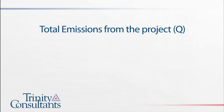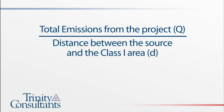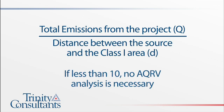The Q over D criteria specifies that when the total emissions from the project, Q, divided by the distance between the source and the Class 1 area, D, is less than 10, no AQRV analysis is needed. However, a Class 1 PSD increment analysis may still be requested by the State Permitting Authority or EPA.